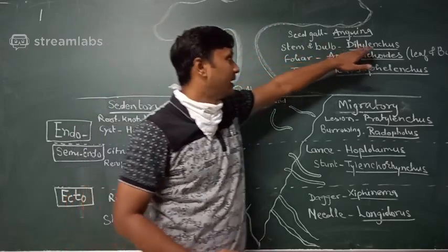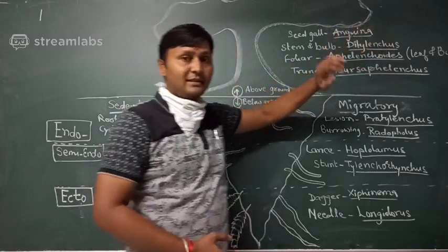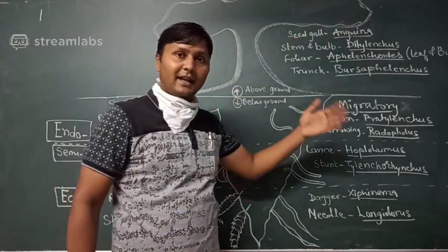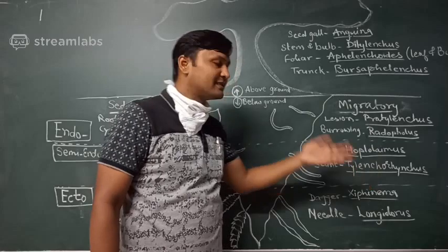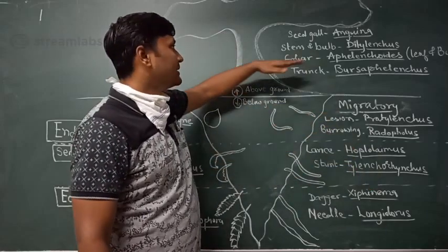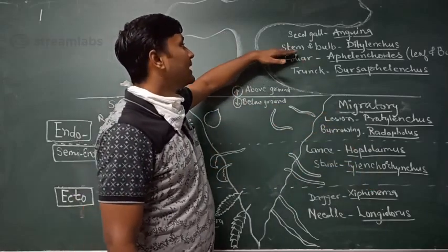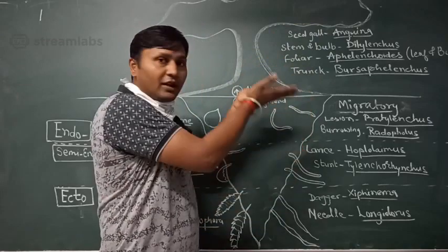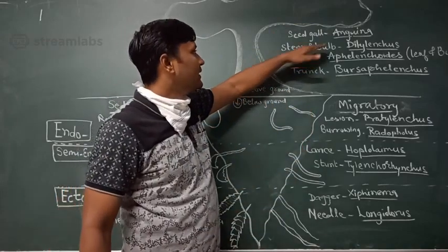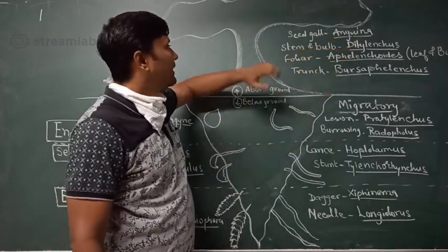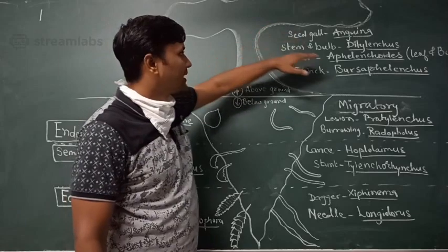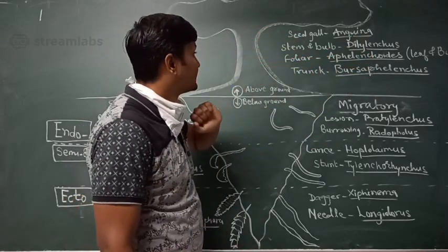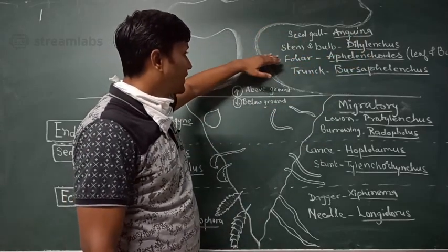The second group of above ground nematodes is the stem and bulb nematodes, Ditylenchus. There are different species such as Ditylenchus angustus and Ditylenchus dipsaci. They feed on foliar parts, including onion, and also cause the Ufra disease in rice.